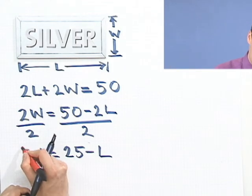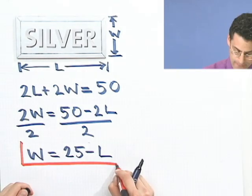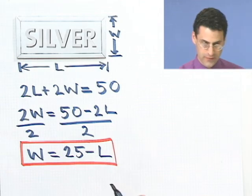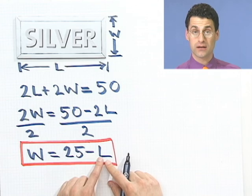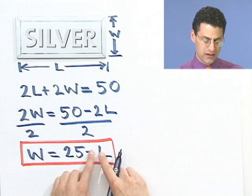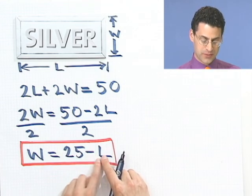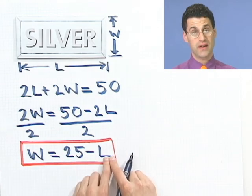And there I did exactly what I was asked to do. I found the width as a function of L. Because if you give me L, I can find W exactly by just plugging into here. So W is a function of L.